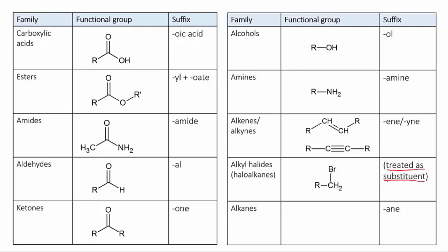The other groups each have their own suffix. If a molecule has an OH group in it, it's an alcohol, and so the end of the name will be "-ol". For instance, a three-carbon chain by itself is propane, but with an OH group attached, it's called propanol.